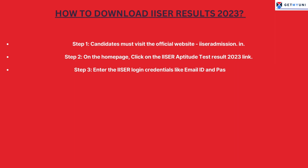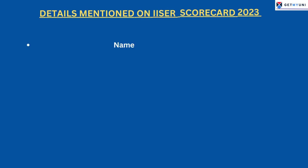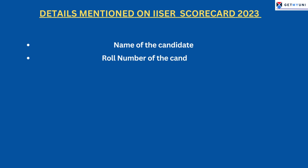Step 3: Enter the ISER login credentials like email ID and password. Step 4: Check the details mentioned in the ISER Result 2023. Step 5: Download the scorecard and take a printout for your future reference. Step 6: Candidates can find the following details on the ISER Entrance Exam Scorecard.